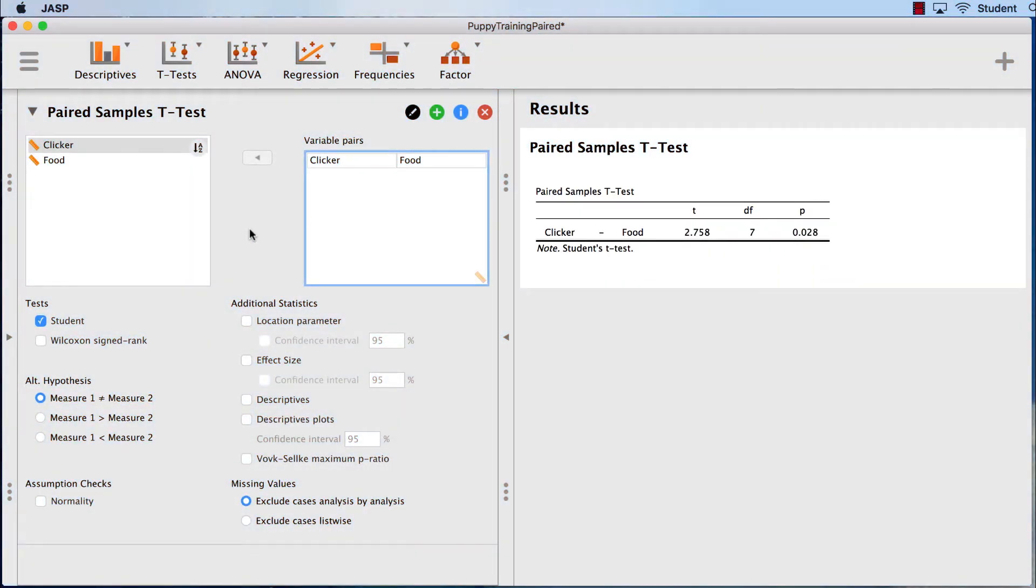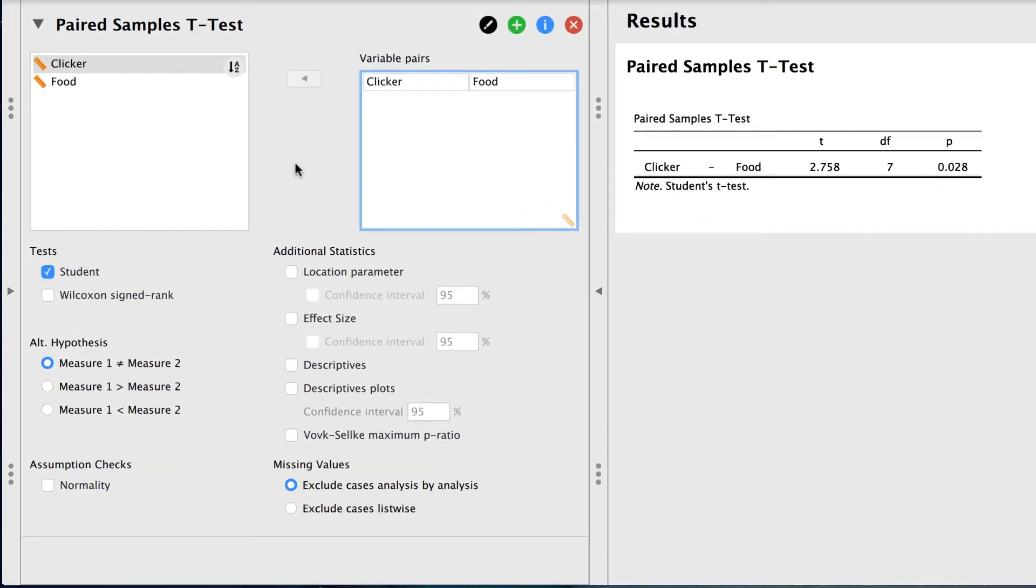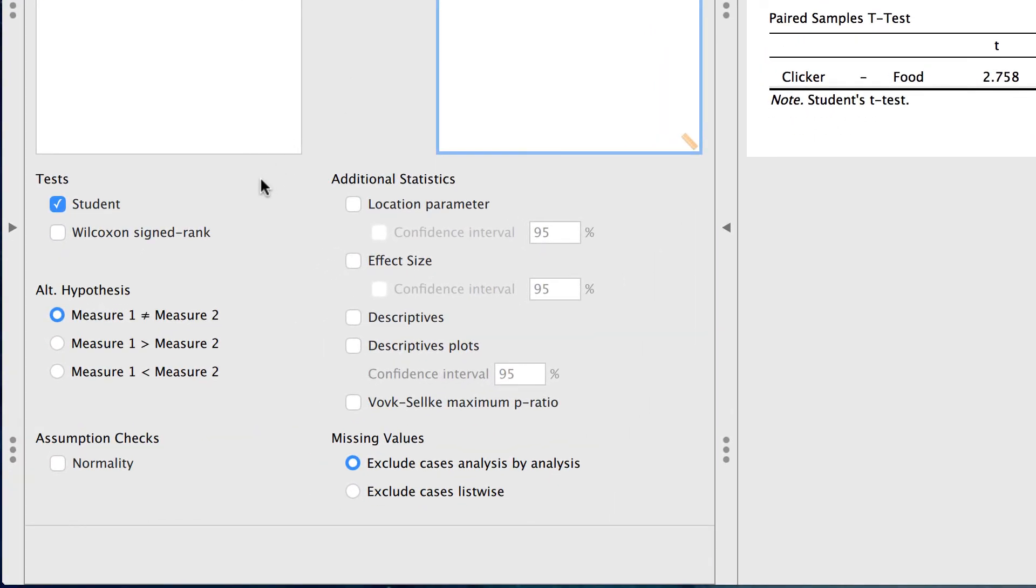In the results window, we see the paired samples t-test statistics. We can already see that the p is less than 0.05, so this test is statistically significant. This is a good start, but I want to know much more. All I need to do is select the options that I prefer. We have an option for the non-parametric alternative test Wilcoxon signed rank test, but we will not need to do that now.